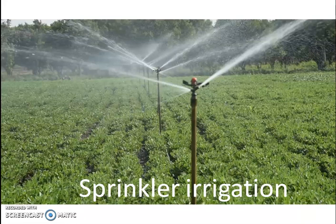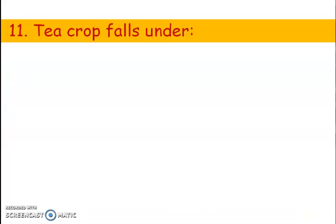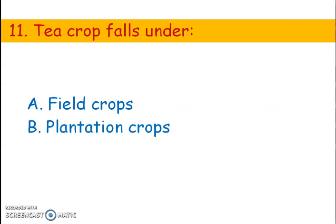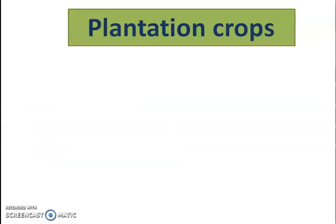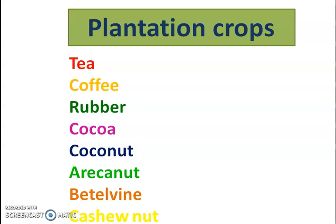Next question. Tea crop falls under which category? Options: A) Field crops, B) Plantation crops, C) Ornamental crops, D) Horticultural crops. The right answer is option B, plantation crops. Tea is a plantation crop. Other plantation crops include coffee, rubber, cocoa, coconut, areca nut, betel vine, and cashew nut.